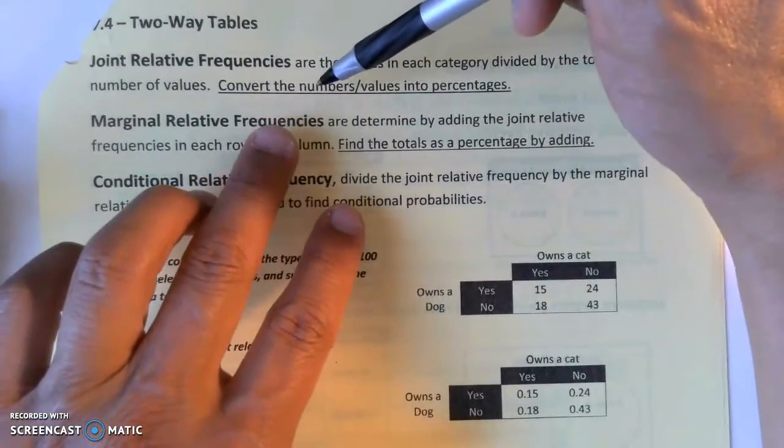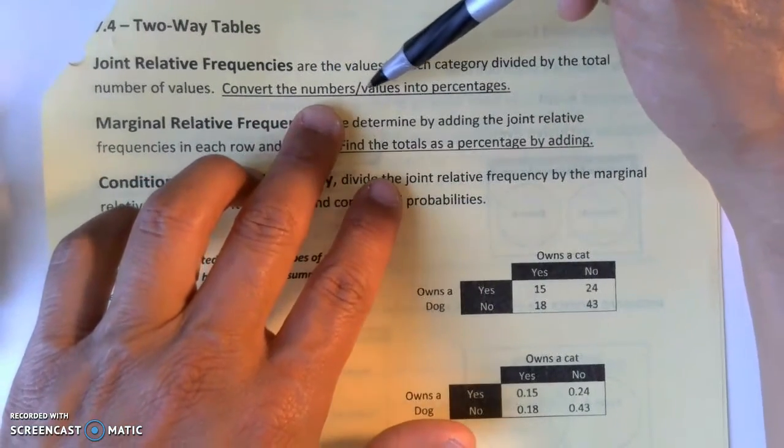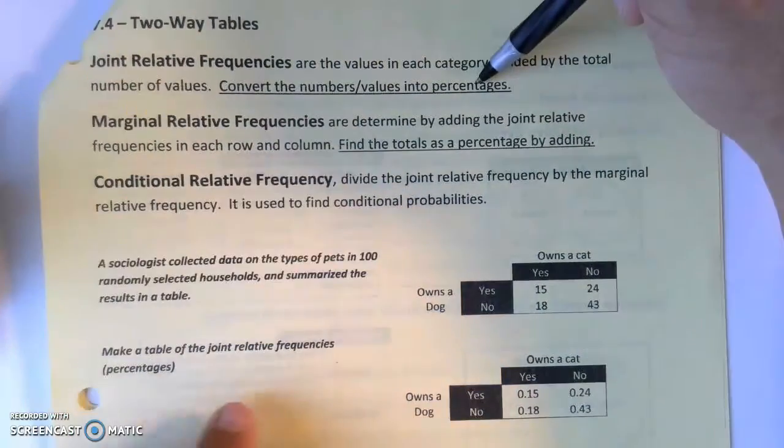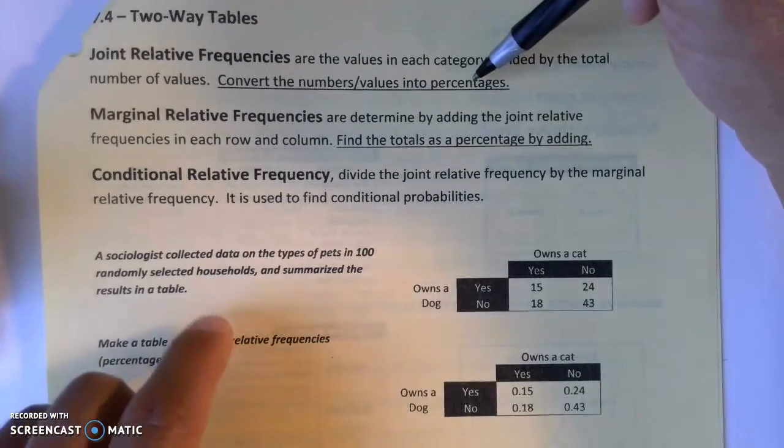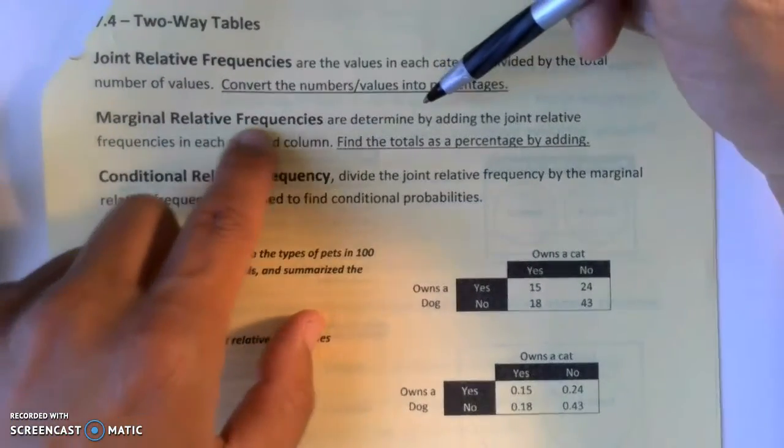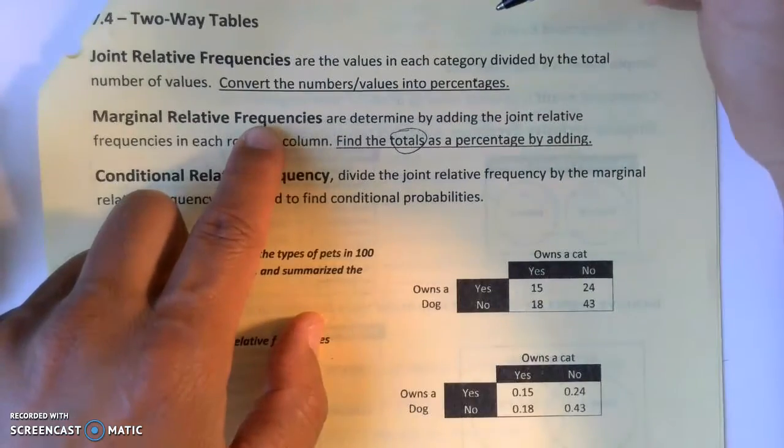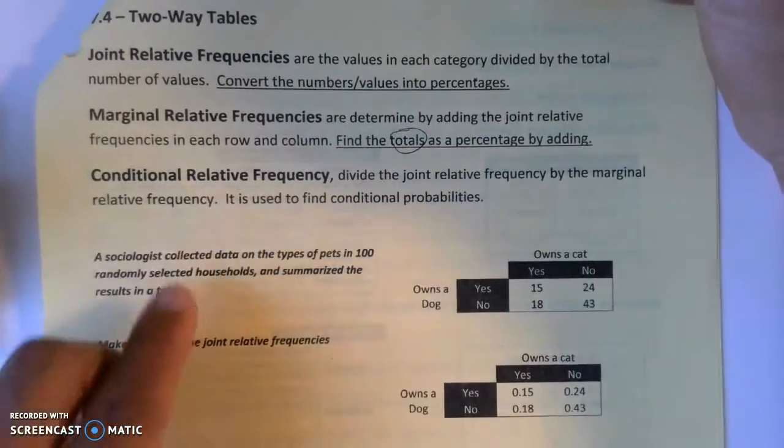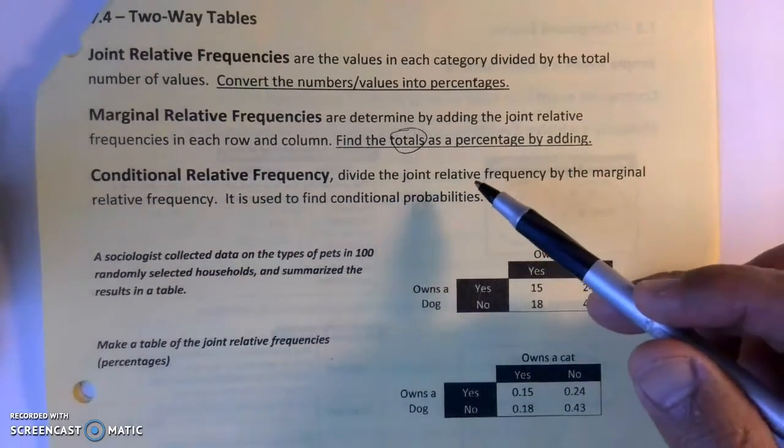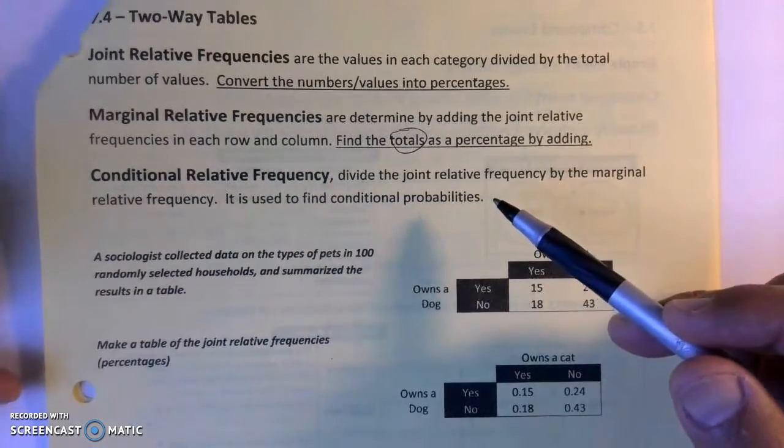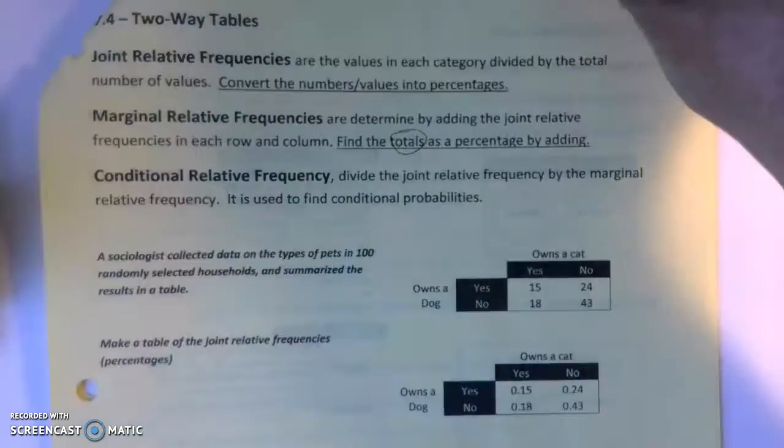Joint relative frequencies convert numbers and values into percents, and that's one of the first things you'll do—make a table turning things into percentages. Marginal relative frequencies find the totals of the percentages, and conditional relative frequency is just solving whatever probability problem they're asking.